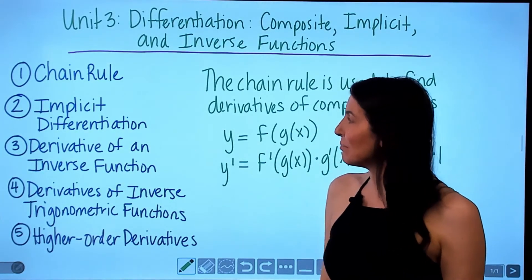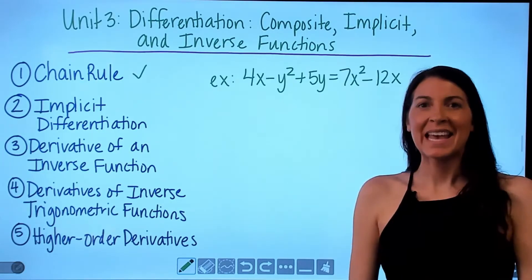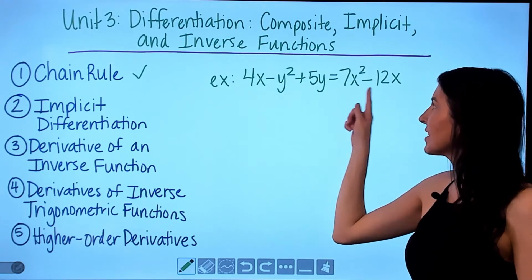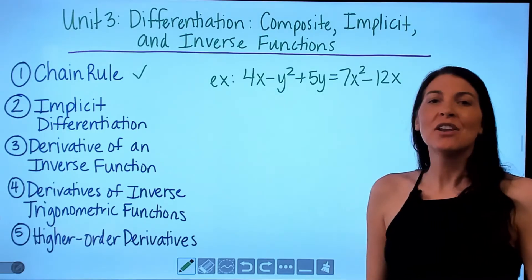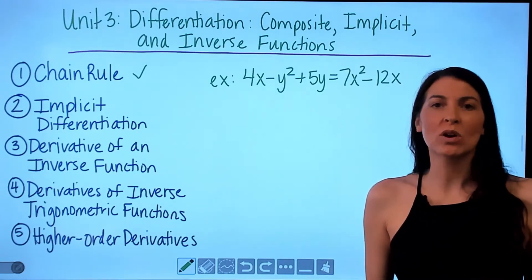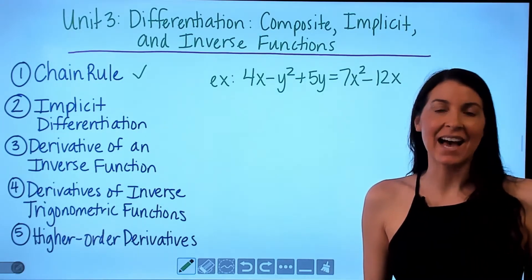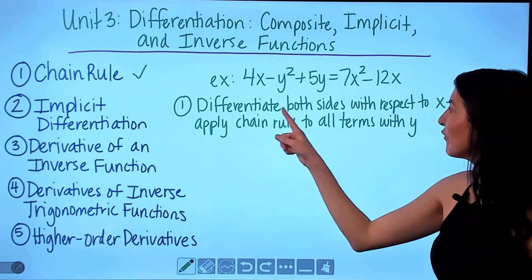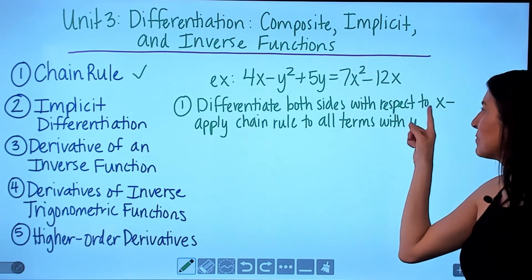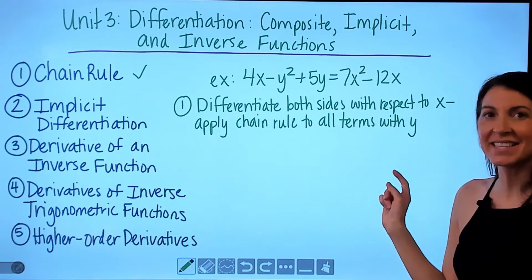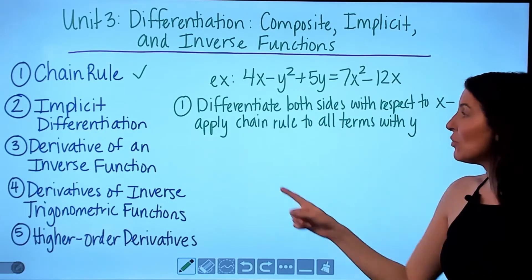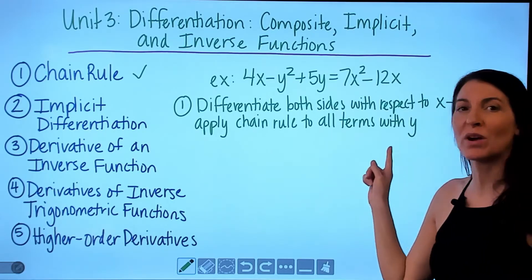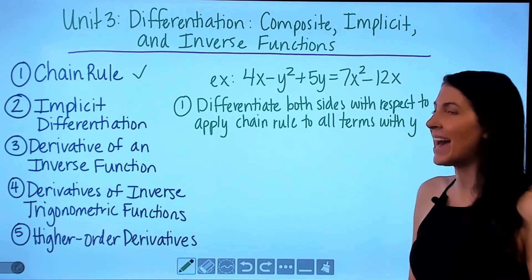Next is implicit differentiation, which is used for equations where y is not isolated. The first step is to differentiate both sides with respect to x, and when we do that we need to apply the chain rule to all terms with a y.